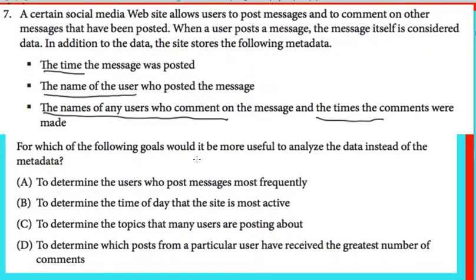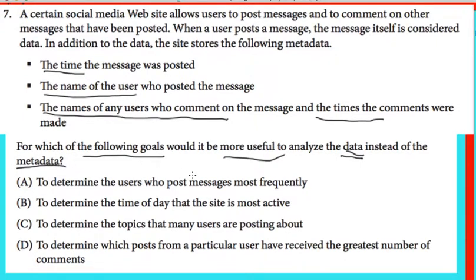The question asks: for which of the following goals would it be more useful to analyze the data instead of the metadata? It's important to understand the question. The metadata includes: time, name of the user, the name of the user who commented, and the time of the comment. Those are metadata. So we need to find the situation where the actual message data is needed instead.